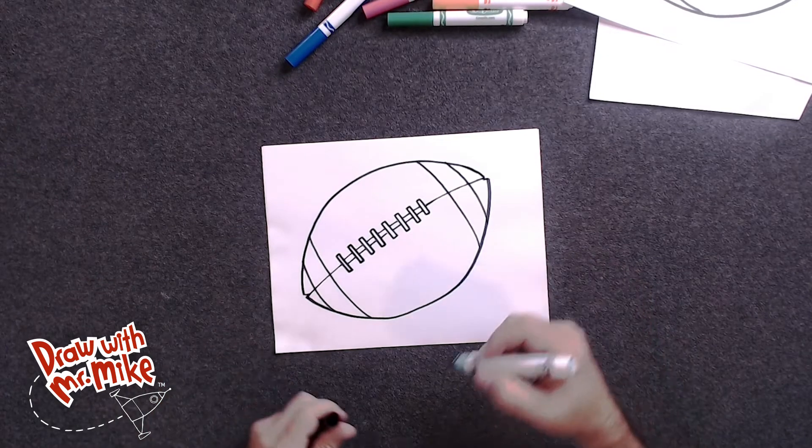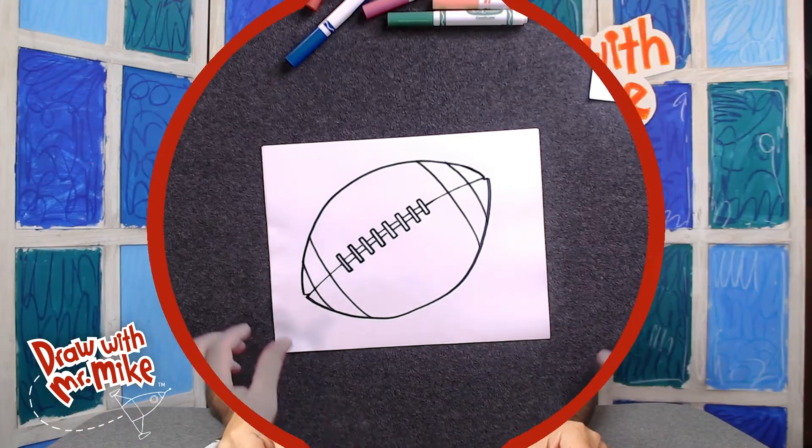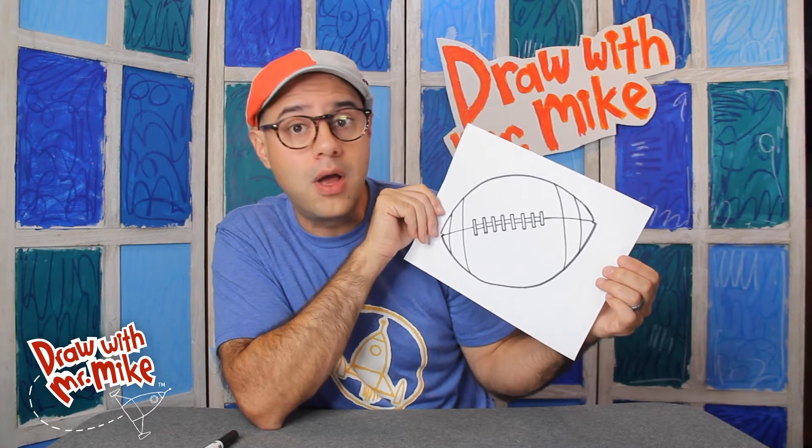And then another here. And there we go. There we have a football. Look at that amazing football we drew together. Wow. And that looks really complex. But we only needed two basic lines and shapes to create this football.